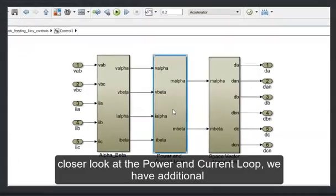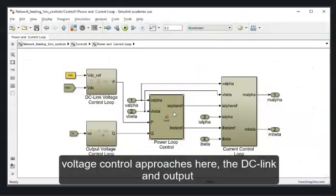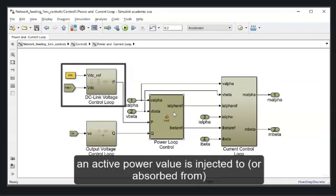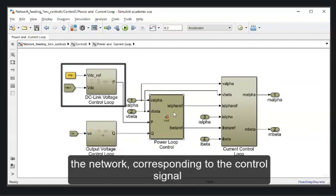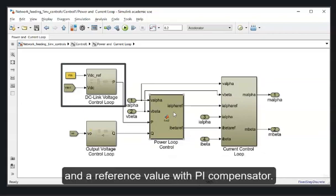Taking a closer look at the power and current loop, we have additional voltage control approaches here: the DC link and the output voltage controls. In the DC link voltage control loop, an active power value is injected to or absorbed from the network corresponding to the control signal produced by comparing the measured DC link voltage and the reference value with a PI compensator.